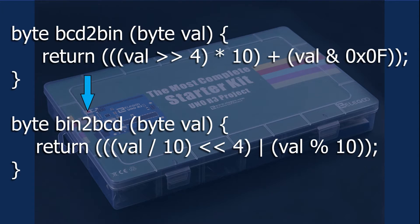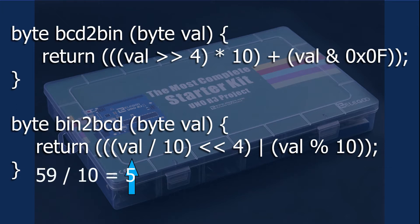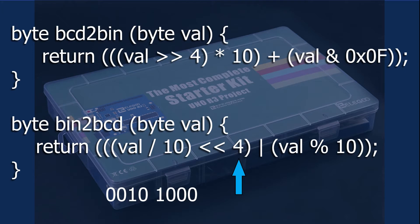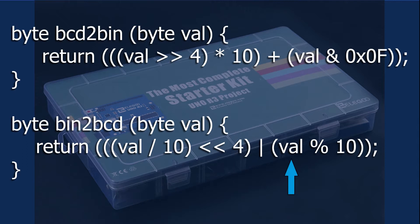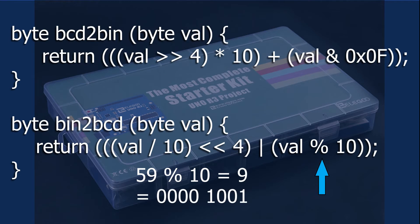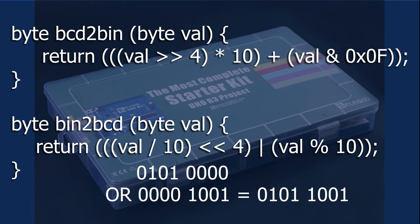The second function, binary to BCD, forms the reverse. The binary value is passed again and used twice. The first part of the code divides the value by 10 — the remainder is discarded — then shifts that value left four places, creating the most significant bits. The second part uses the arithmetic operator remainder, shown as a percent symbol, which divides the value by 10 and keeps the remainder while discarding the quotient. The two values are then OR'd together and returned by the function.